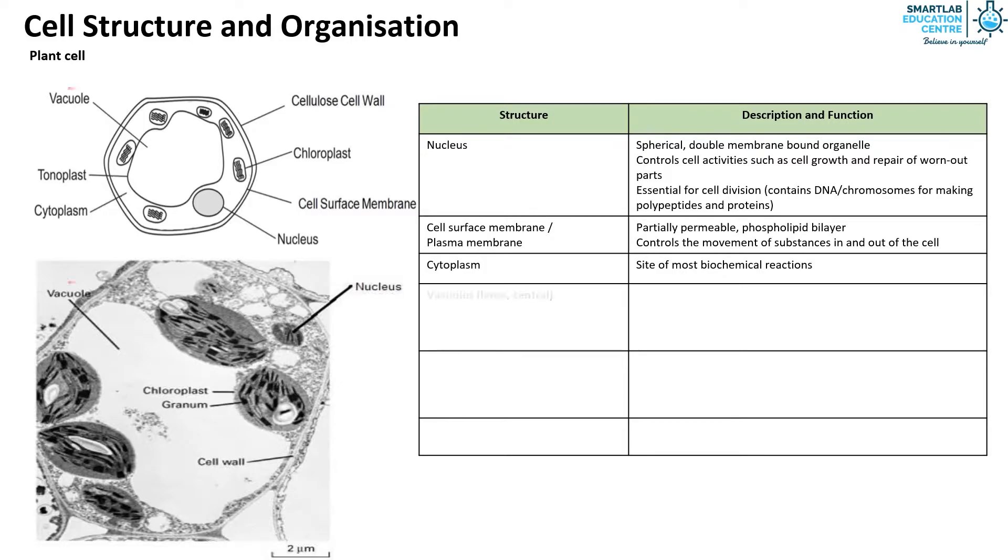The vacuoles of plant cells are large and central. They are also membrane-bound, fluid-filled spaces. They contain soluble sugars, pigments, amino acids or waste products, but don't contain starch. They have a membrane called tonoplast.